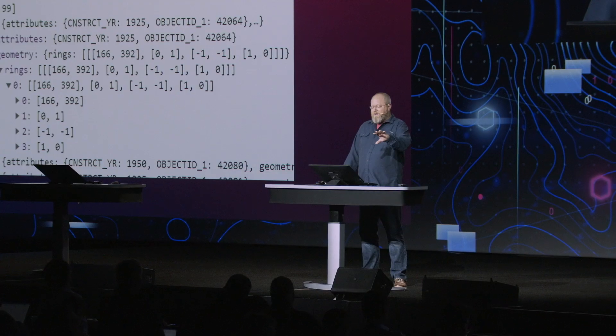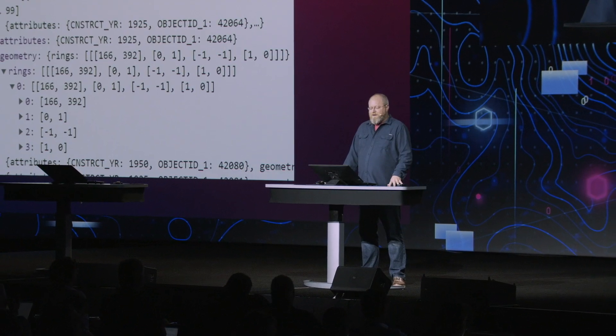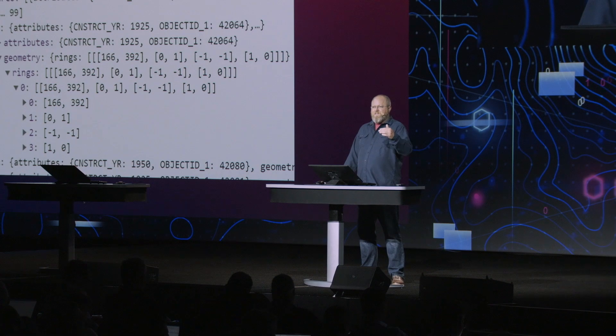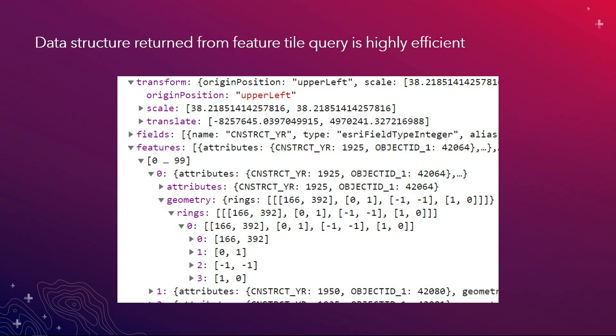The data structure returned from the feature tile query is highly efficient. Just to call out the one polygon geometry at the bottom — I've just got the starting point of that geometry, and then the offsets to complete it.